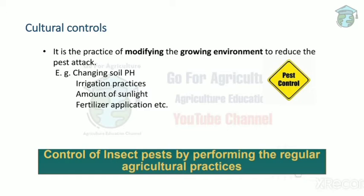In cultural methods, we change the environment to control the pest. For example, we can change soil pH, modify irrigation practices, change the amount of sunlight, or reduce fertilizer application. Not only these, but many practices are included in cultural control.